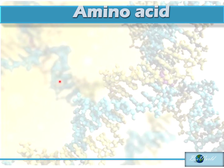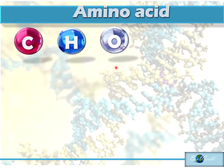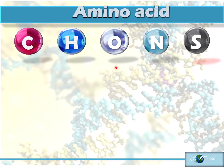Amino acids are organic molecules so they will be made up of the elements carbon, hydrogen and oxygen. Amino acids will have one extra element that is very important, which is nitrogen. Some amino acids can have sulfur but this is not compulsory.